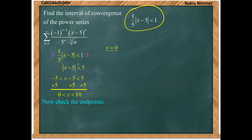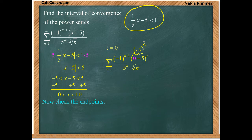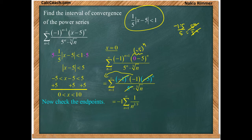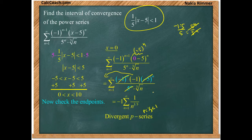Now we check the endpoints. At x equals 0, we replace x in the series with 0. The negative 1 to the n plus 1 combined with the negative 5 to the n in the numerator and the 5 to the n in the denominator — the 5 to the n's cancel. We're left with 1 over n to the 1 third, which diverges because it's a p-series with p equals 1 third, which is less than 1. So the series diverges at x equals 0.